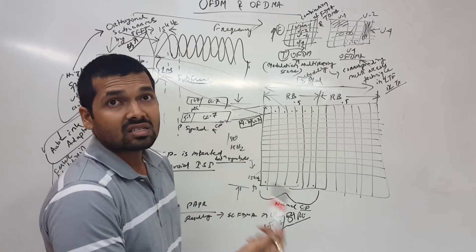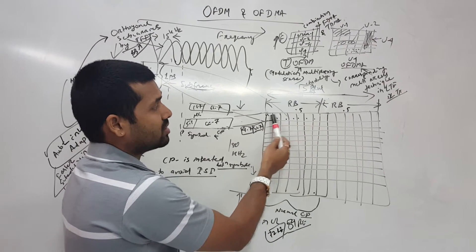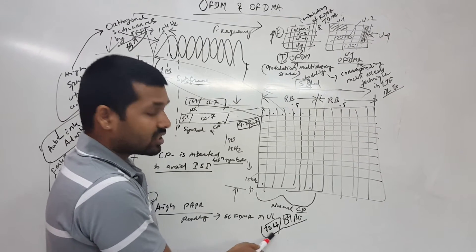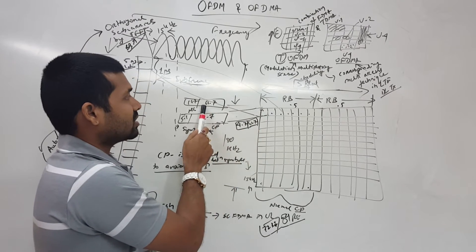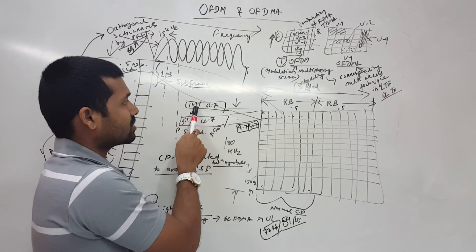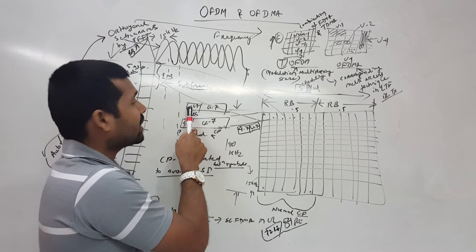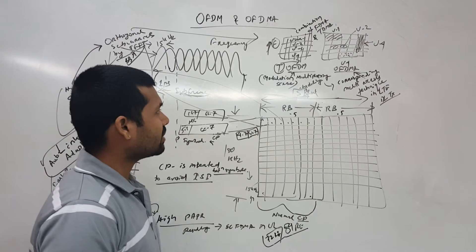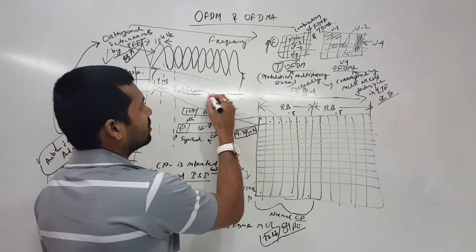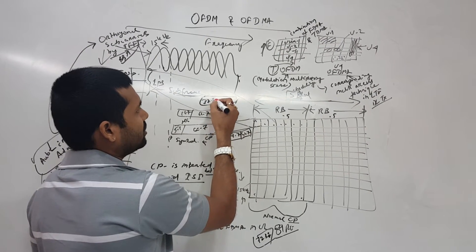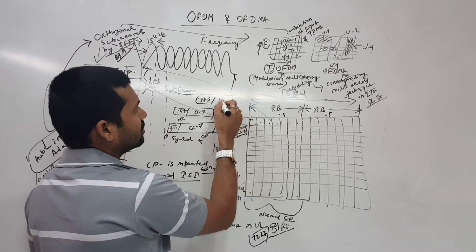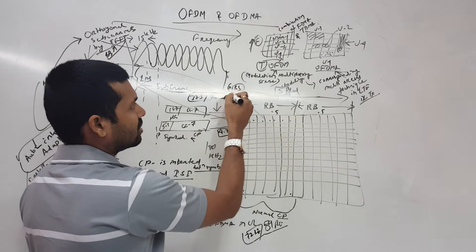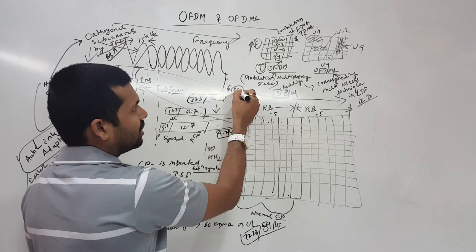When we use extended cyclic prefix, this would not be 7, it would be 6 symbols and 12 subcarriers, so that would be 72 resource elements. One symbol is explained here: the cyclic prefix would be 16.7 microseconds and the symbol timing remains the same, 66.7. We are having another type of cyclic prefix, that is 33.3, and that is used when we are using multicast broadcast services, MBMS.